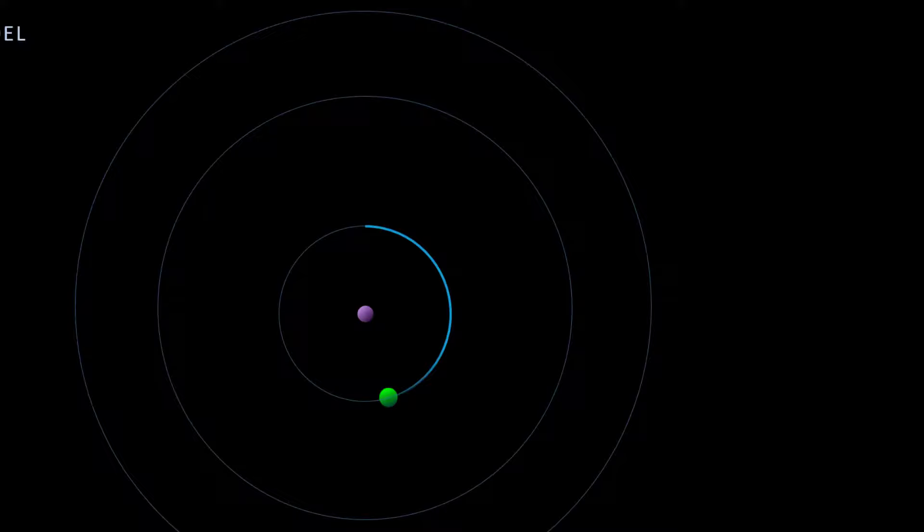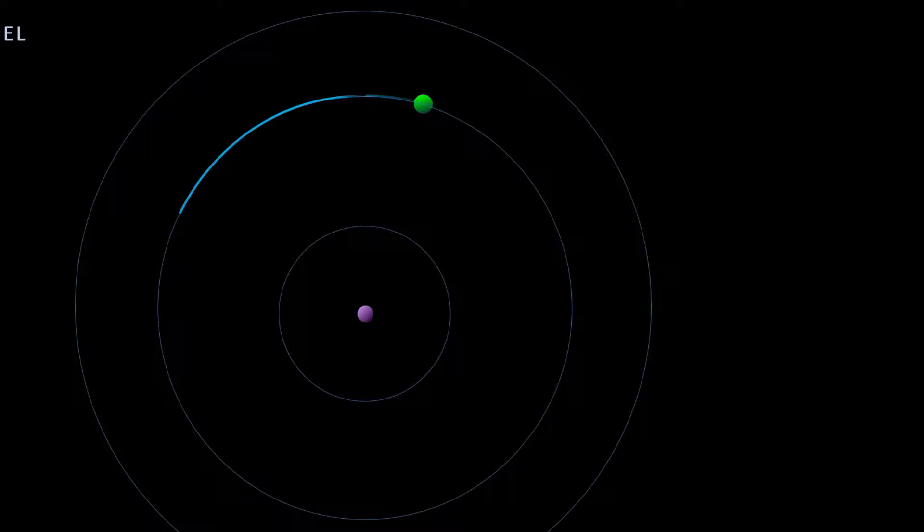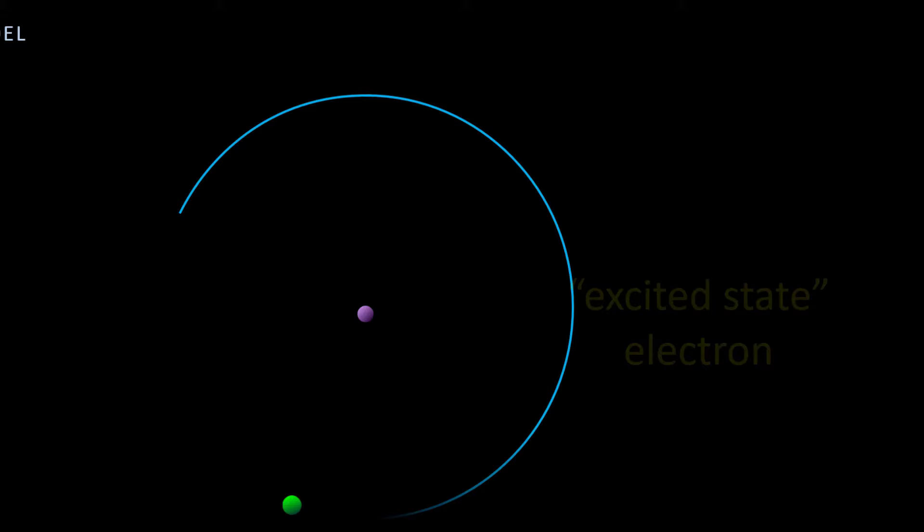Without being disturbed, the electron exists at the lowest energy possible, which is called the ground state. If a ground state electron absorbs the right amount of energy, it can go to a higher energy but will then lose that energy in the form of light and go back to ground state. The electron that has absorbed energy is called an excited state electron. So ground state absorbs energy, goes to excited state, loses energy, and goes back to ground state.